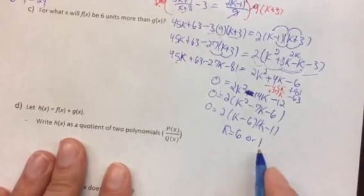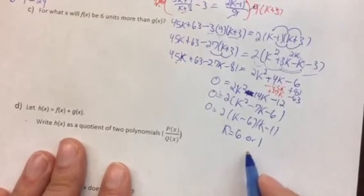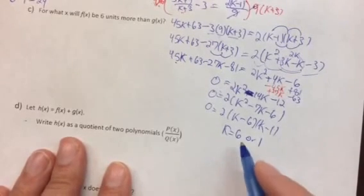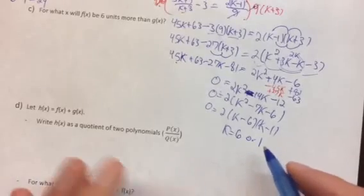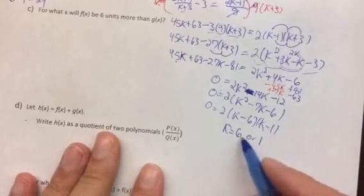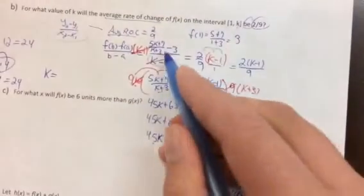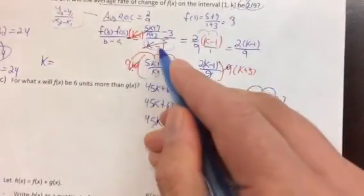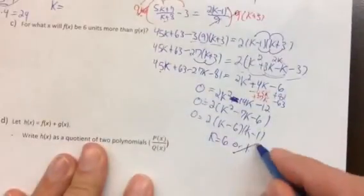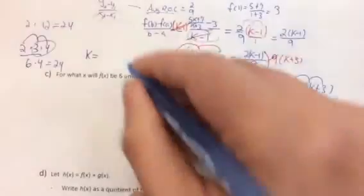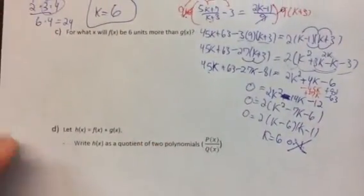We need to check our answers for extraneous solutions. k equals 6 or k equals 1. When we plug in 6, it doesn't make anything equal to 0, so that's valid. But when we plug in 1, it causes a division by zero. So the answer is k equals 6. That was a lot of work!